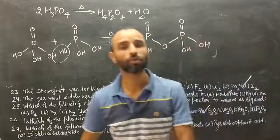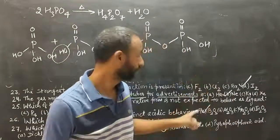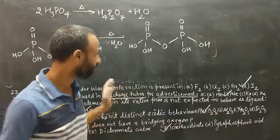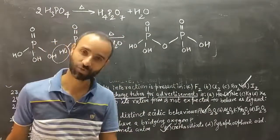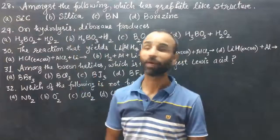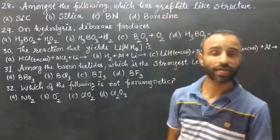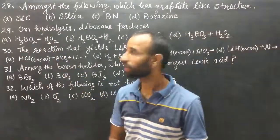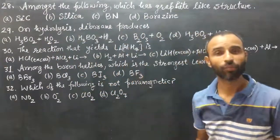So those are the questions from CSIR-SET 2014, questions 21 to 27. Just note them down and then we will proceed to the next questions. Next is question 28, from CSIR-SET 2016: which among the following has a graphite-like structure — silicon carbide, silica, boron nitride, or borazine?